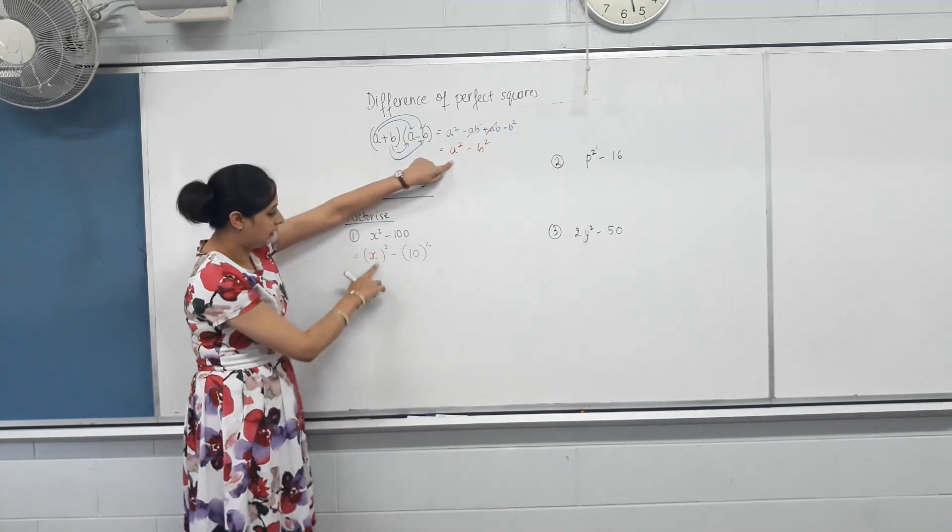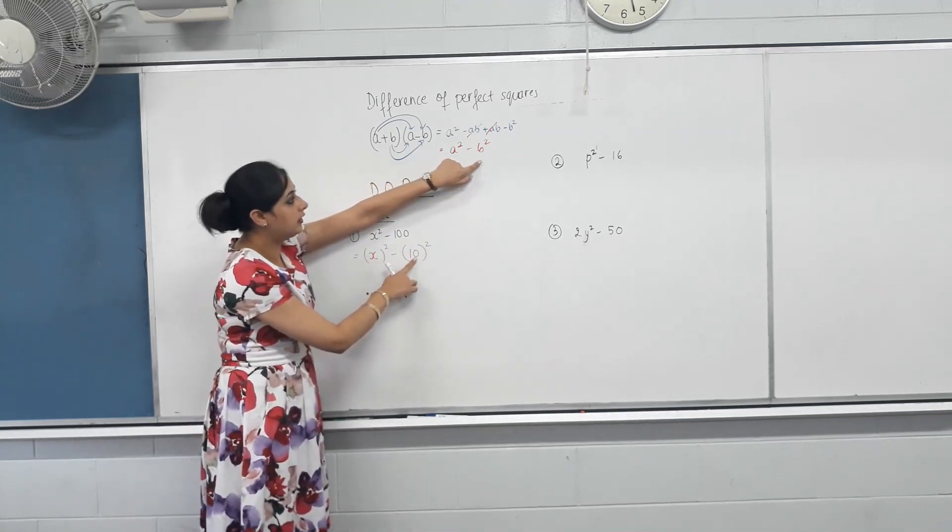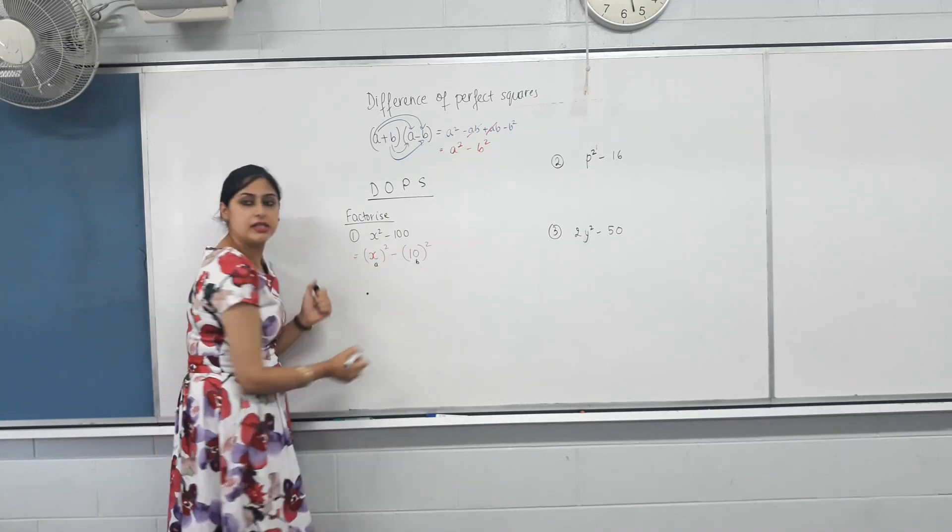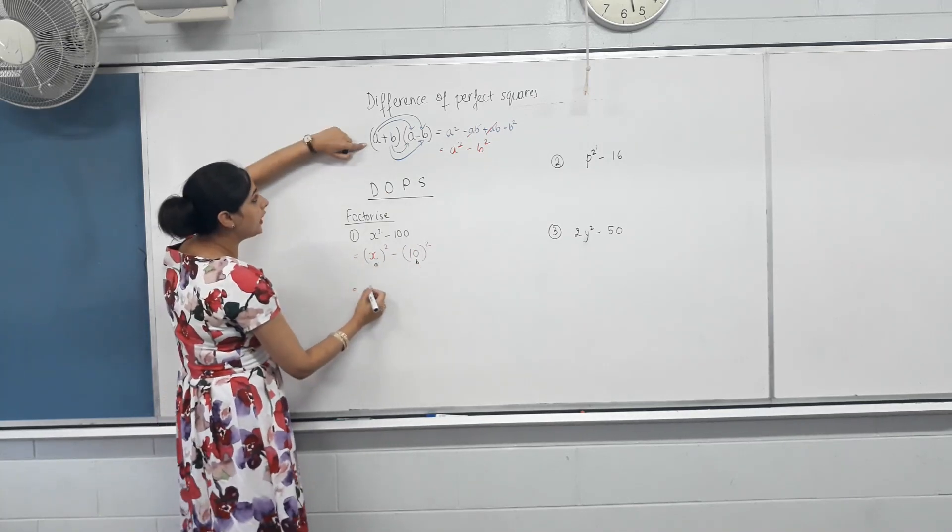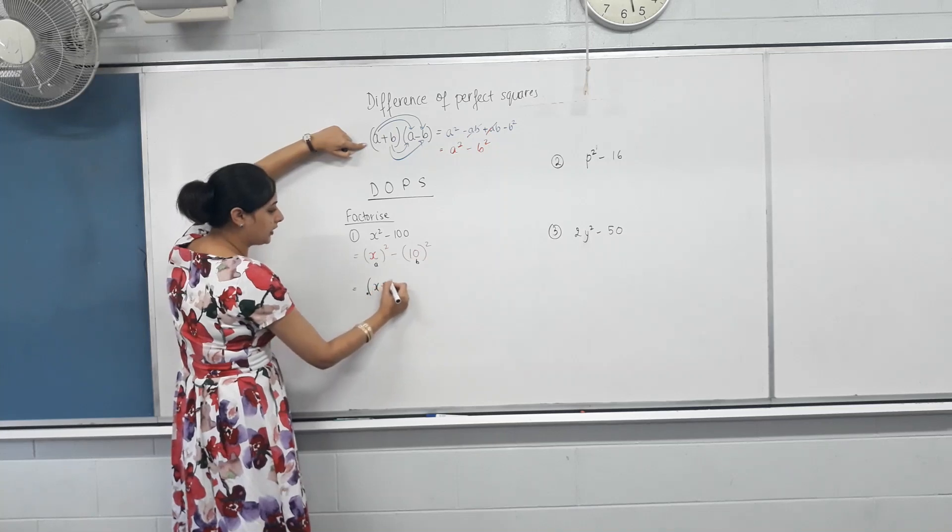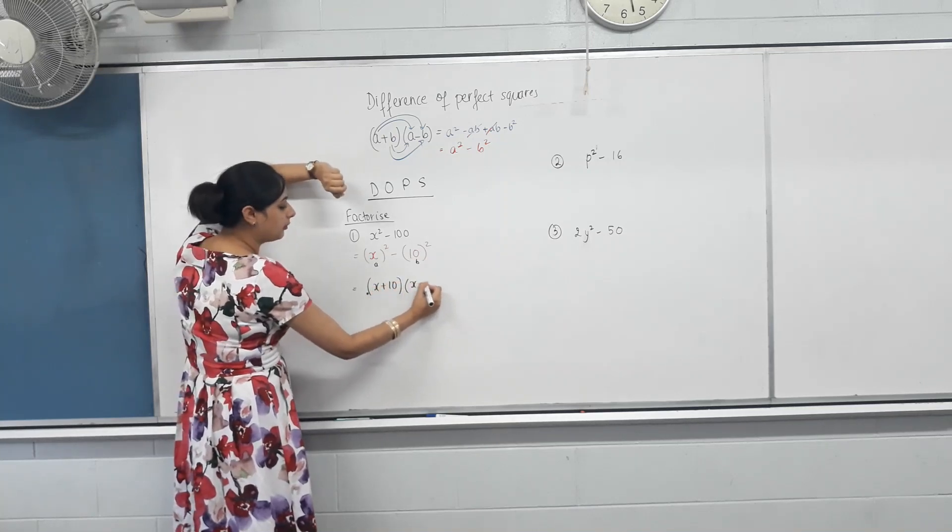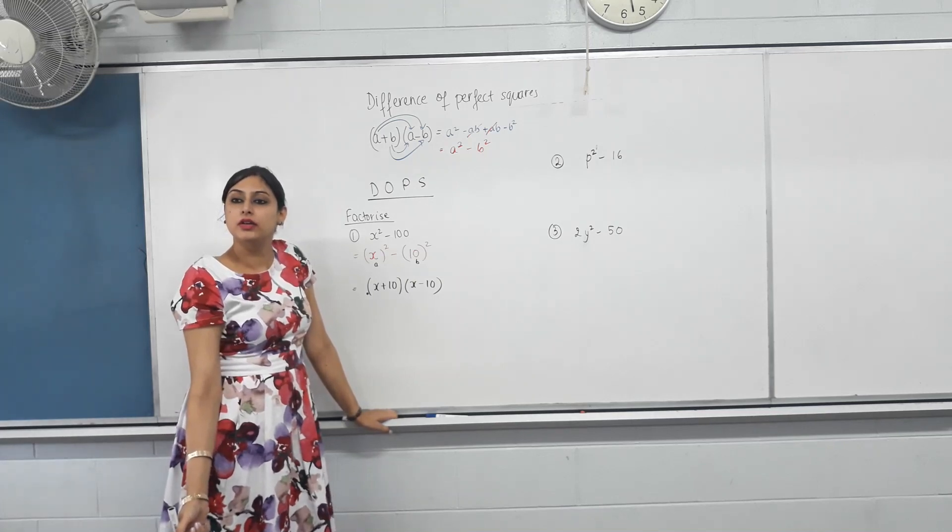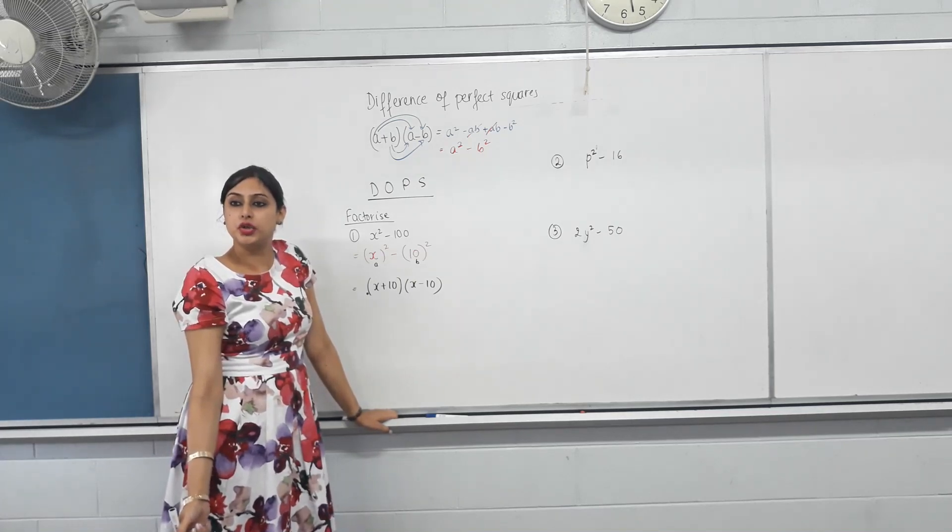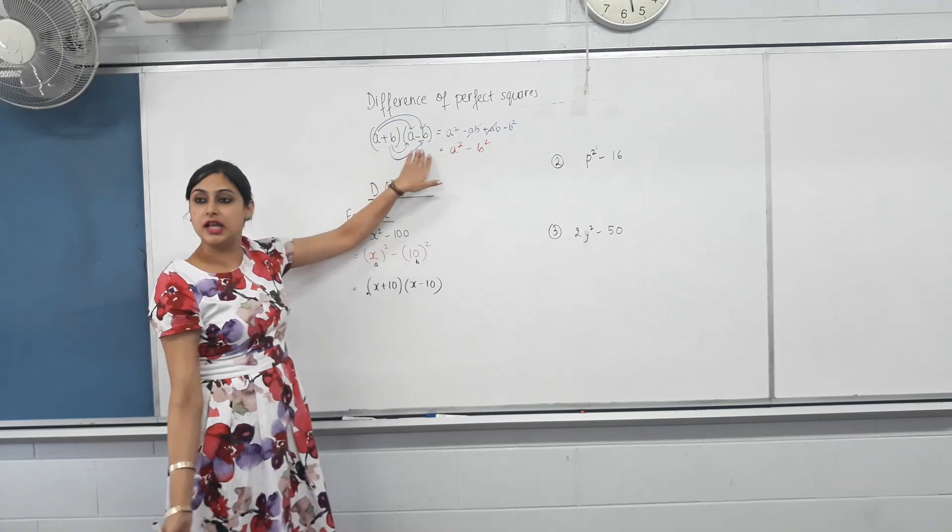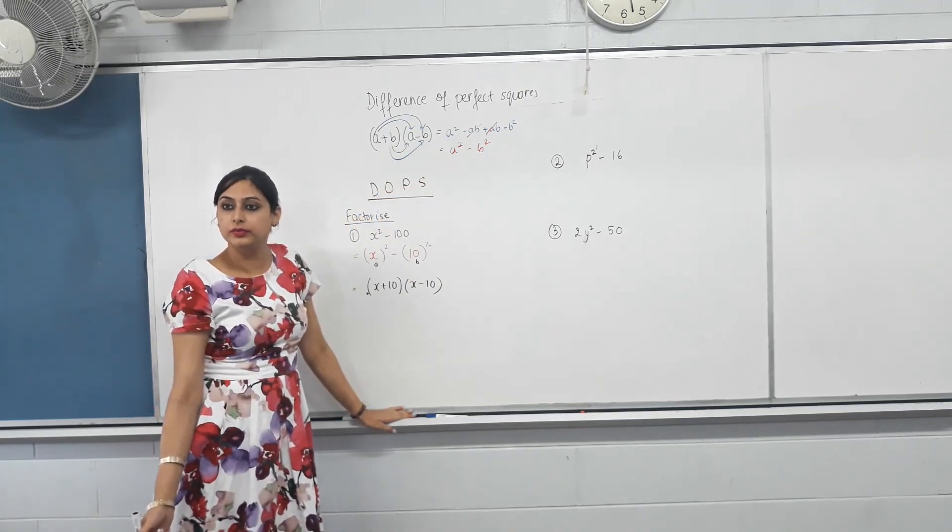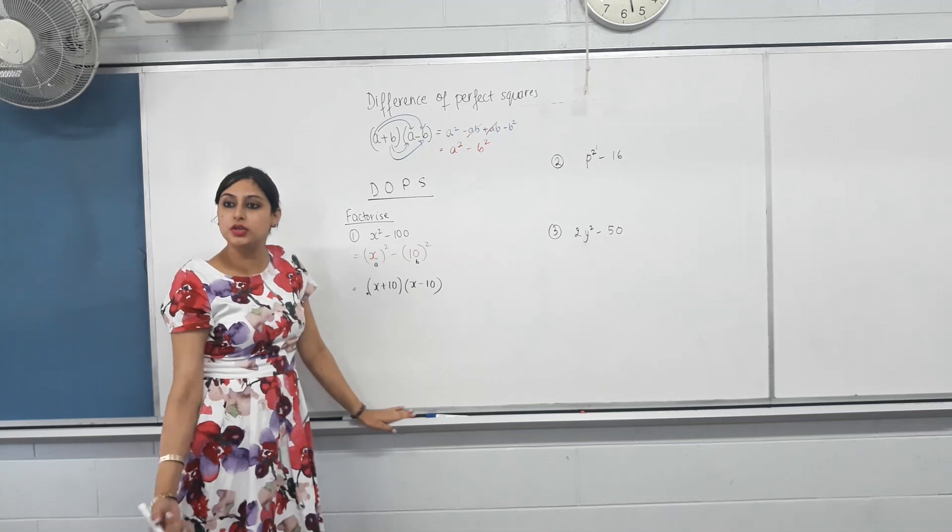So, what's your A? X. What's your B? 10. Well done. So, A is X. B is 10. So, what would your A plus B be? X plus 10. X plus 10. So, we have used our shortcut to this understanding to factorize our DOPS. Is that clear? Yes. Good. To be clearer if you pay attention, don't get distracted.